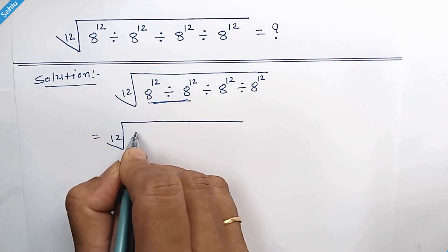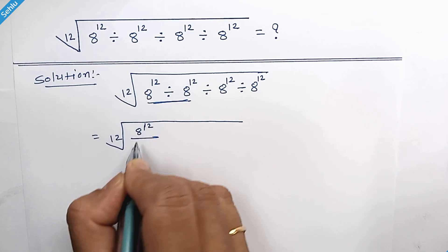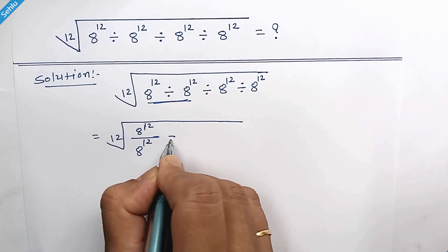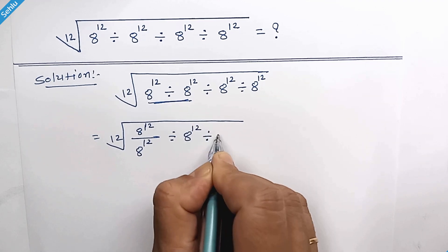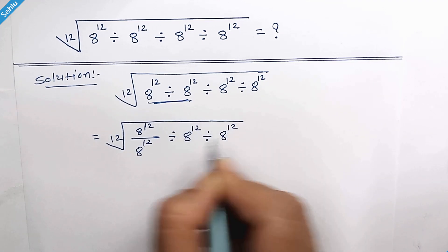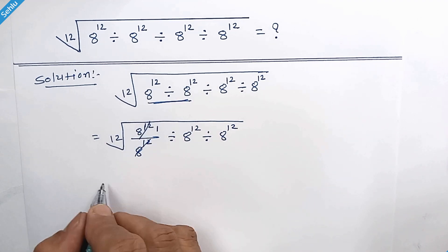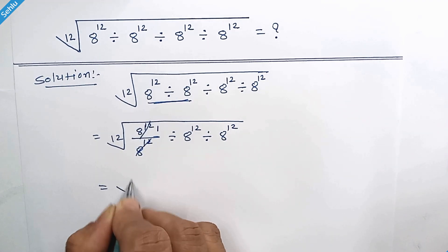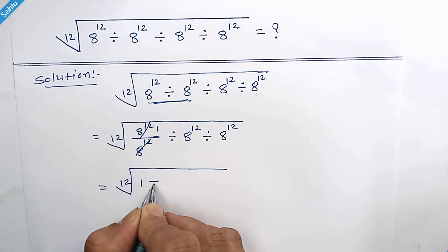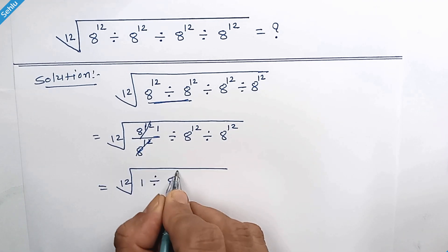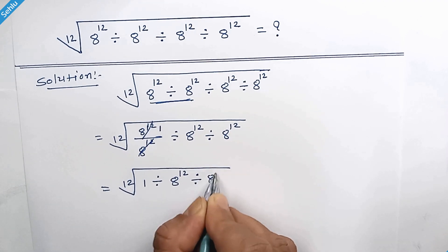So we have 8 to the power 12 divided by 8 to the power 12. These get cancelled out and here we have 1. So we have 1 divided by 8 to the power 12, over 8 to the power 12.